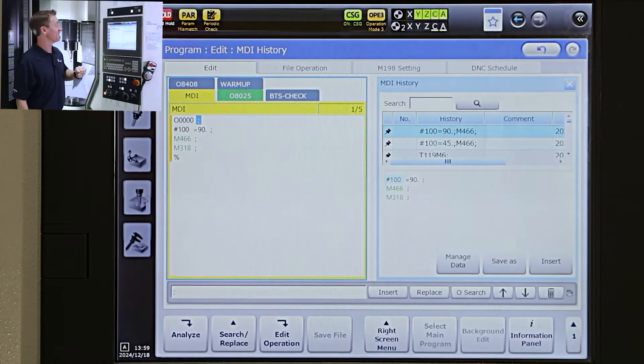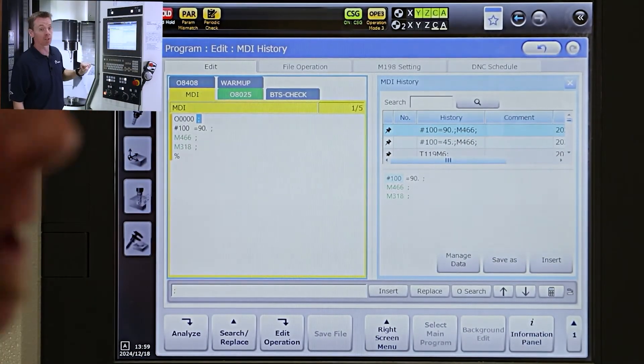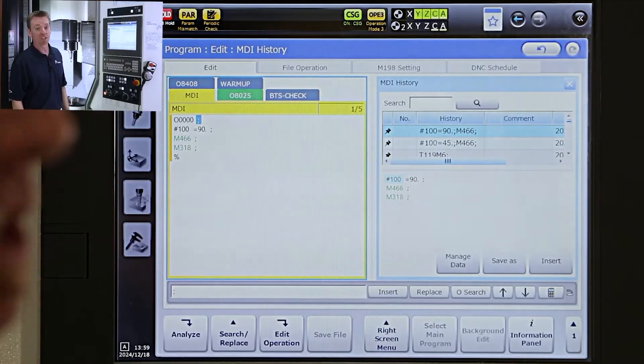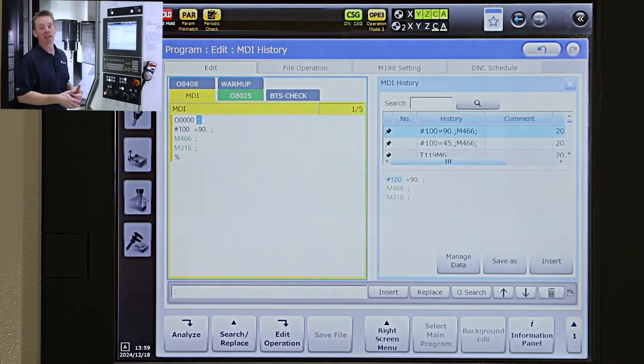The M466, we could look that up, but it just says, hey, read pound 100. And then the M318, which is actually what initiates the orientation.